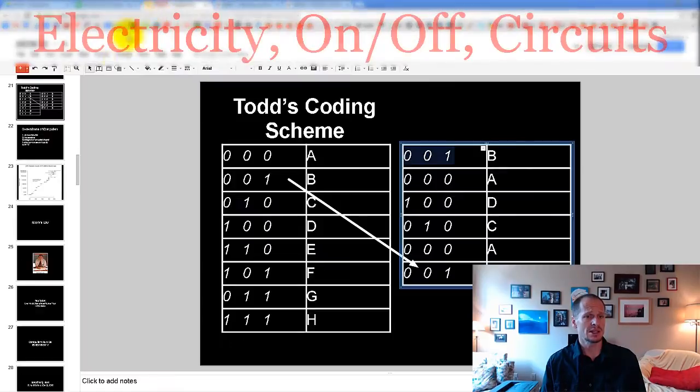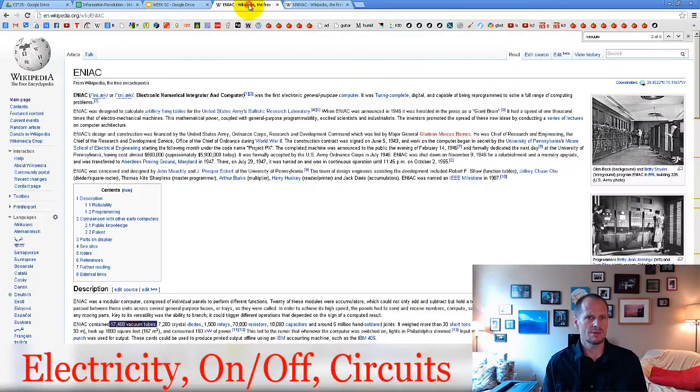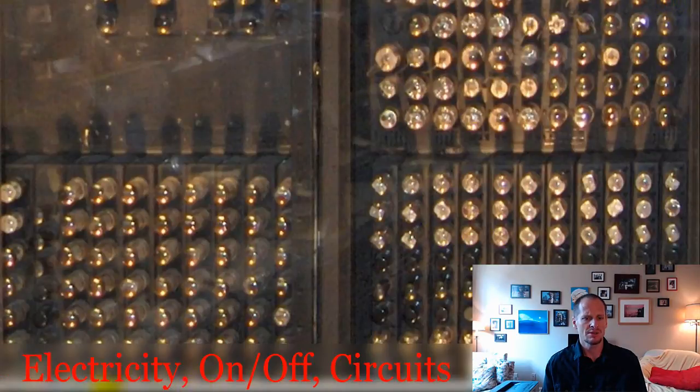That's the ENIAC, and the first computers actually worked by storing on-off states with the vacuum tubes. We characterized the generations of computers based upon what kind of technology they used to store on or off states. So the first computers, the first generation of computers, they are characterized by vacuum tubes, and the ENIAC was the first digital computer.